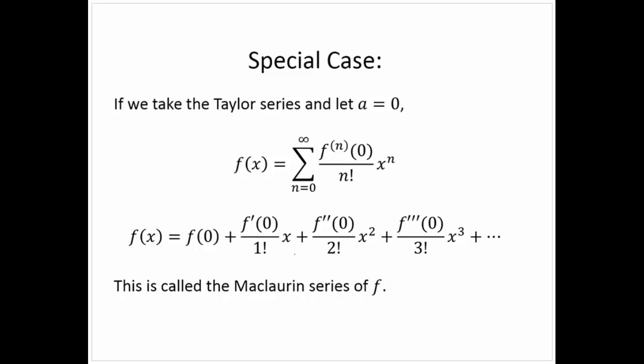A special case exists. If we take the Taylor series and let a = 0, the function becomes Σ(n=0 to ∞) f⁽ⁿ⁾(0)/n! · xⁿ. So f(x) = f(0) + f′(0)/1! · x + f″(0)/2! · x² + f‴(0)/3! · x³ + ⋯. This is called the Maclaurin series representation. Now we're going to build some of these—find the series representations of specific functions.